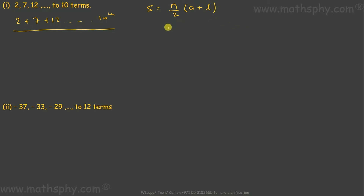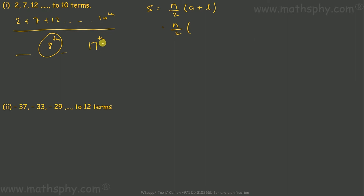Suppose we have a series which goes up to say 17 terms and we want the sum up to the 8th term. In that case it is not the last term of the full series, but we take the series only up to the 8th term, and the 8th term becomes the last term. So in place of last term we can write a_n — the nth term up to which we want the sum.